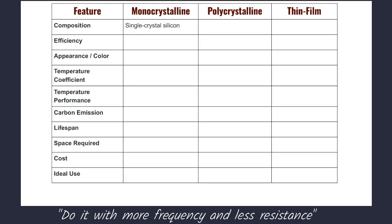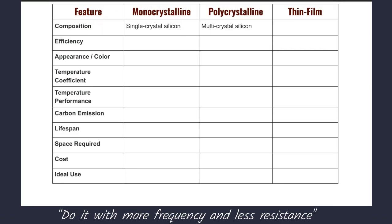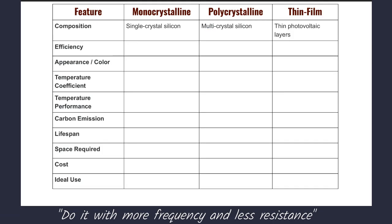We will see the difference between them by their features. First one is composition, meaning the structure they are made up of. Mono-crystalline panels are made from high purity silicon formed into a single continuous crystal structure. Poly-crystalline panels are manufactured by melting multiple silicon fragments together to form a solid panel. Thin-Film panels are constructed from ultra-thin layers of photovoltaic materials, such as amorphous silicon or cadmium, and these panels are flexible like plastic.